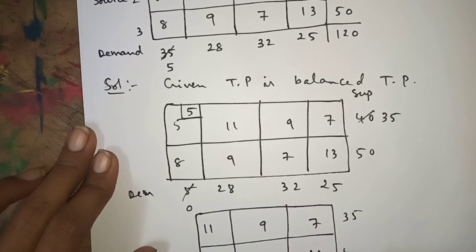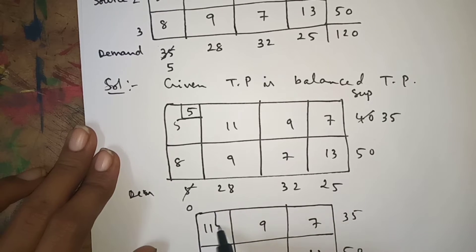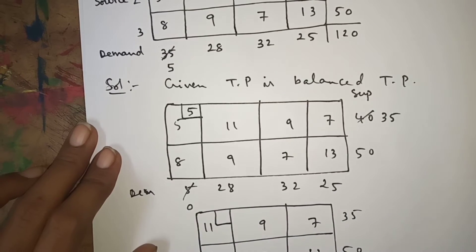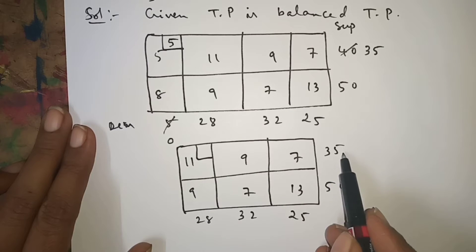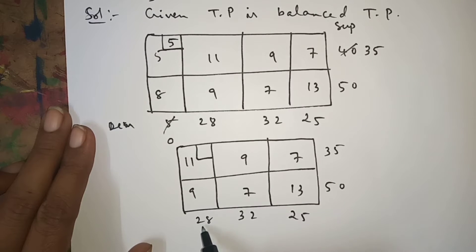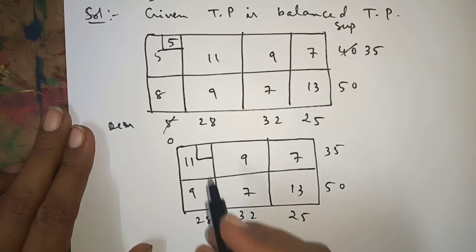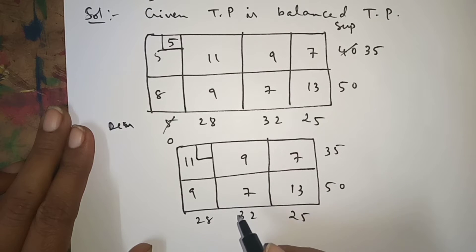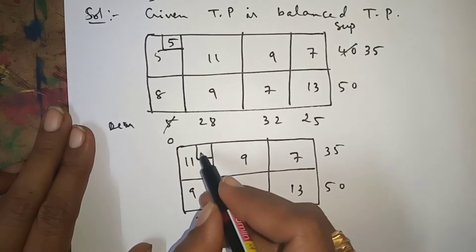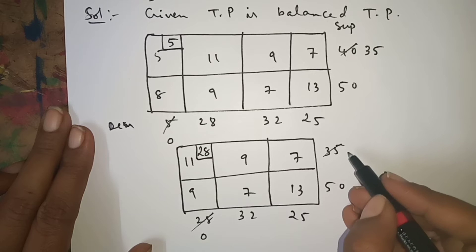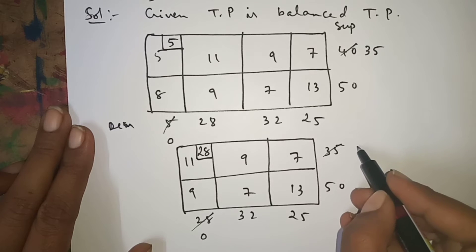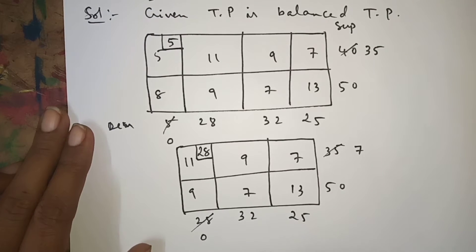Now the updated supply is 35, 50 and the demand is 28, 32, 25. Go to the northwest corner and put one box. The supply is 35 and the demand is 28. Out of 35 and 28, the minimum is 28. We use 28; supply remaining is 7, demand becomes 0.